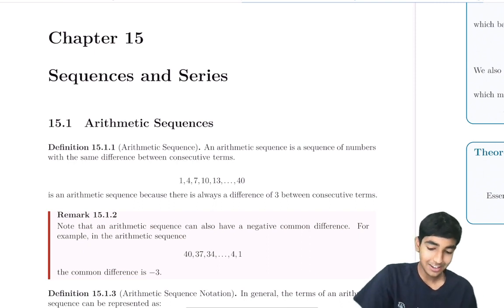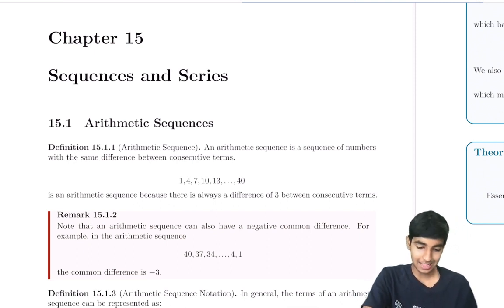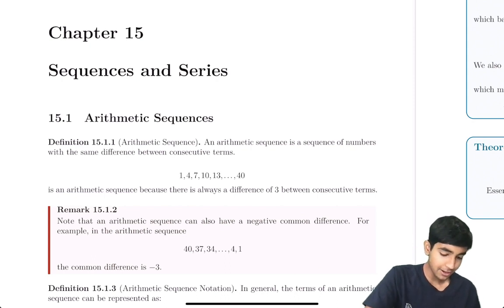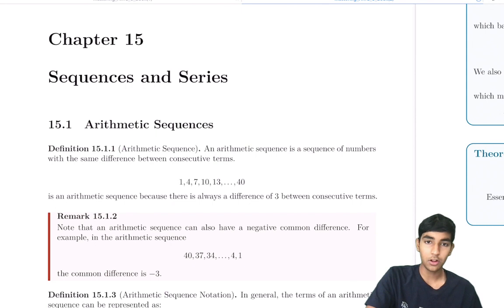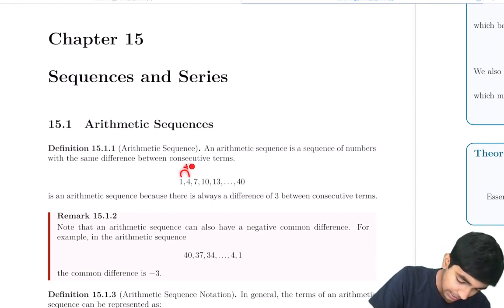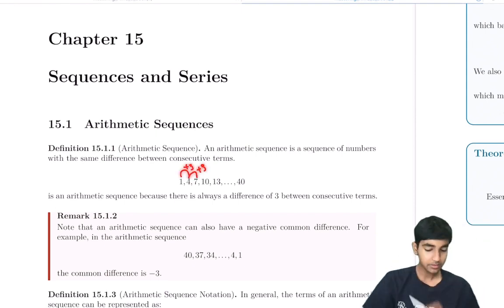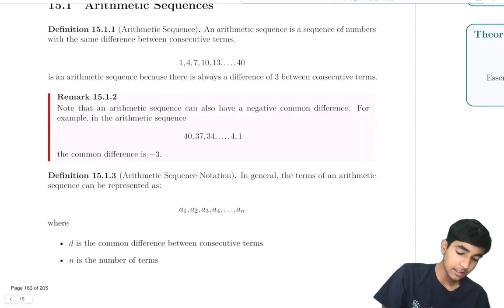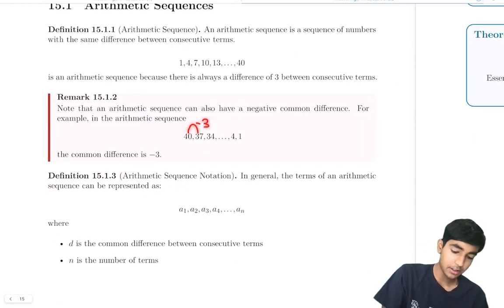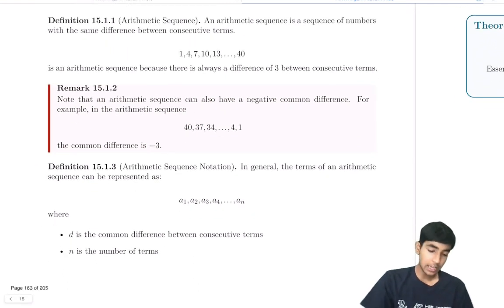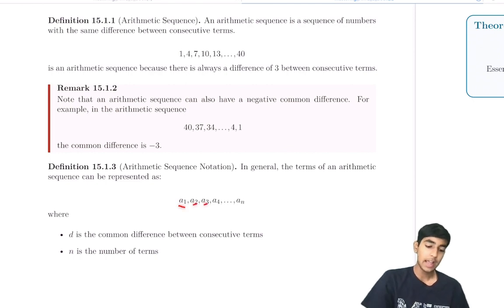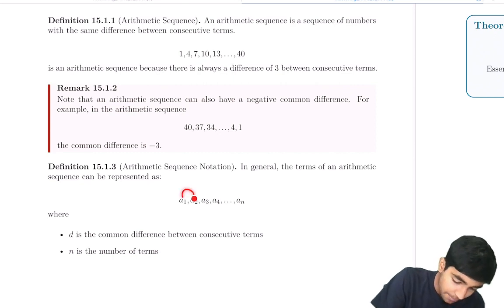Arithmetic sequences are sequences that have the same difference between consecutive terms. For example, in this sequence over here, we're always adding 3. Arithmetic sequences can also have negative common differences. In general, our arithmetic sequence notation is a1 for the first term, a2 for the second term, and so on. an is the nth term, where n is a variable. And we say that d is the common difference.